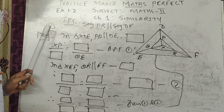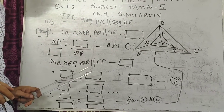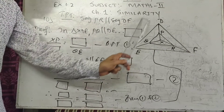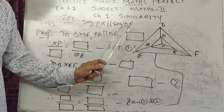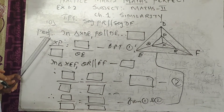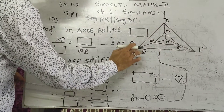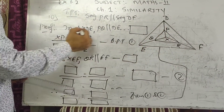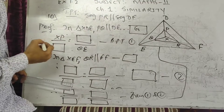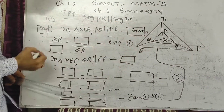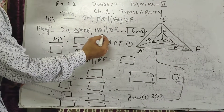Now come to exercise 1.2 sum number 10 — an activity sum that appeared in the 2020 board exam. It is very easy and very important. We have to prove that segment PR is parallel to segment DF. In triangle XDE, PQ is parallel to DE (given). By BPT: XP upon PD is equal to XQ upon QE.